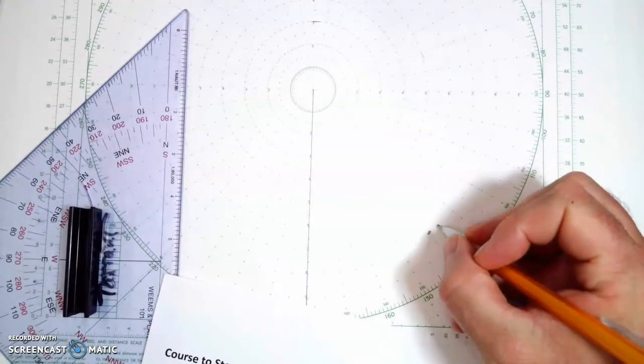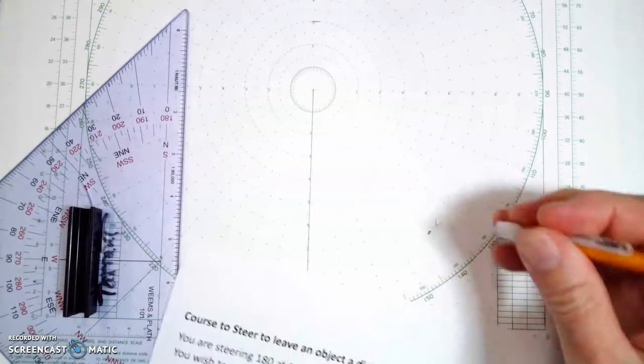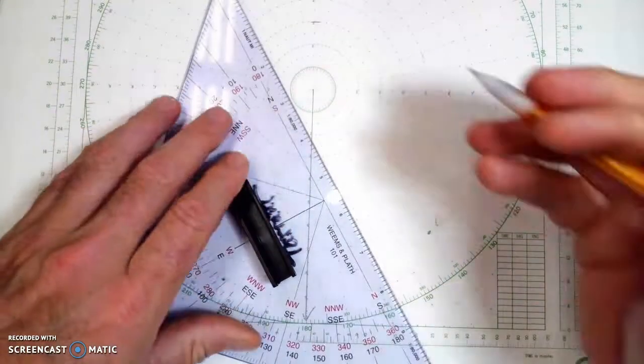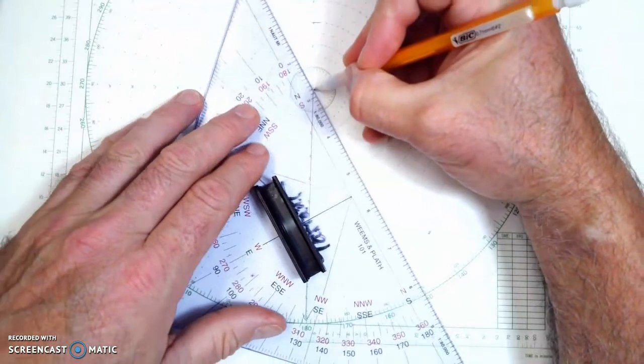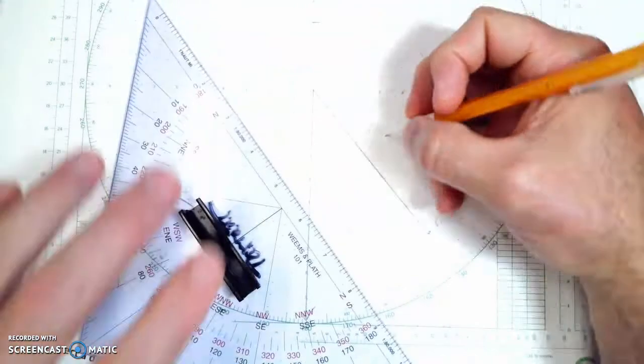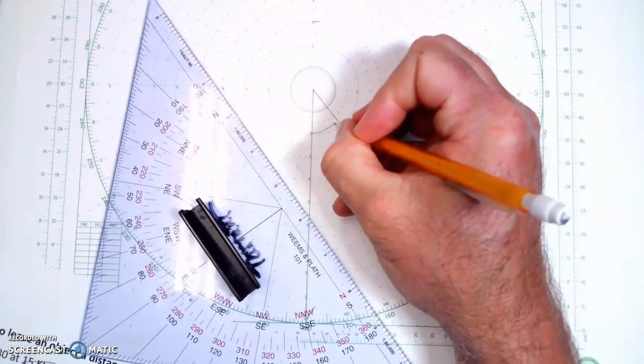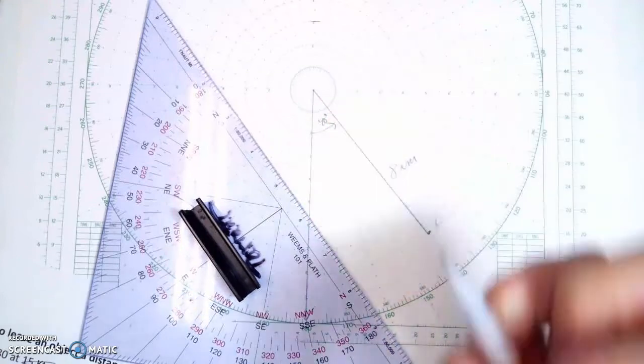I'm just going to go ahead and put that symbol there. It's 8 miles off of our port bow. So I can draw this now. And that is the leg. That is 8 nautical miles. This is 40 degrees.